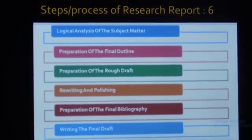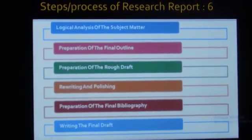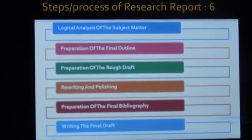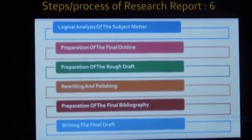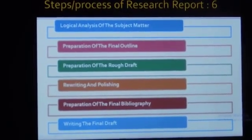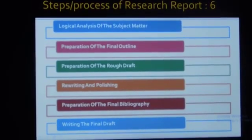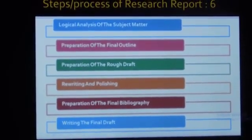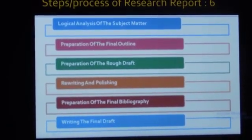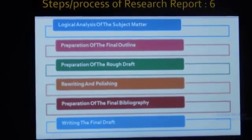Fourth is rewriting and repolishing — at this point, you correct, rewrite, and reset your research report before final submission. Fifth is preparation of the final bibliography — which references you are going to take in your research, and what kind of data you have collected, comes under the bibliography. Sixth is writing the final draft — it is the final and last step in your research report writing, and then it's done.